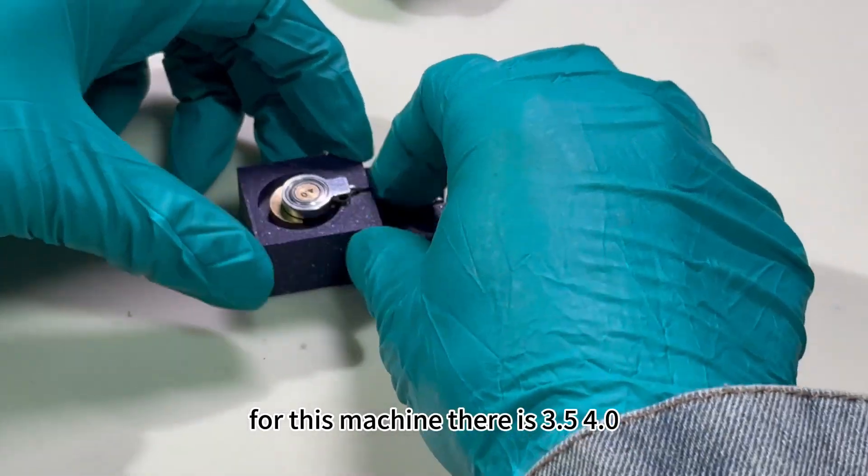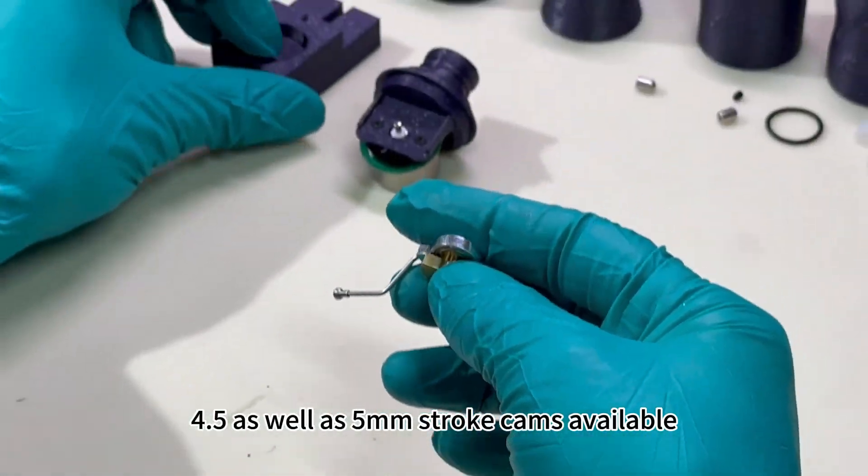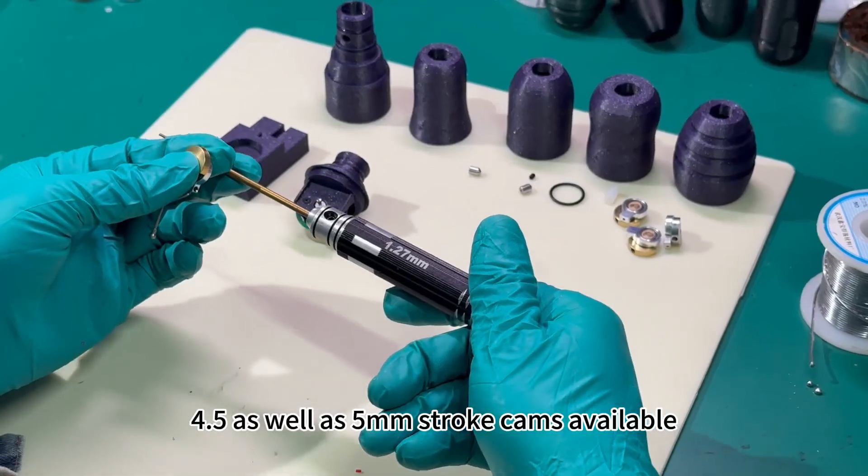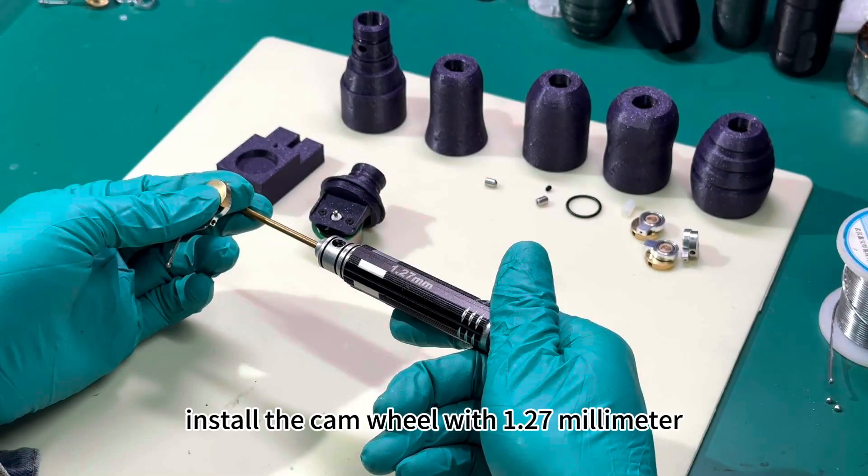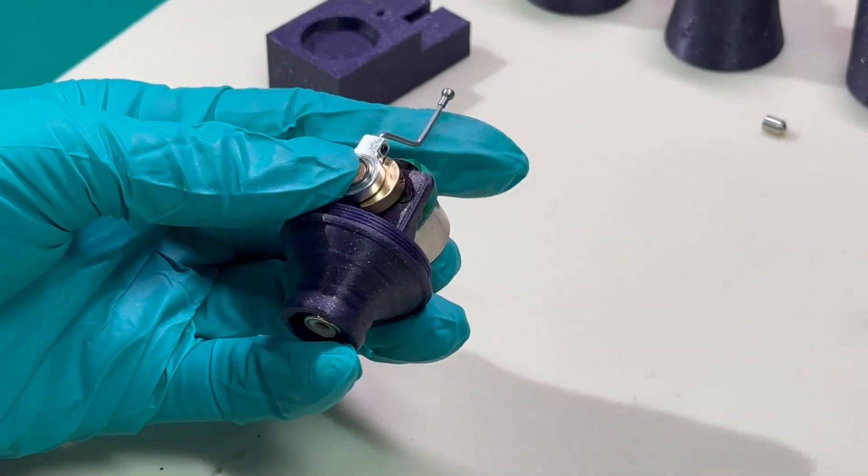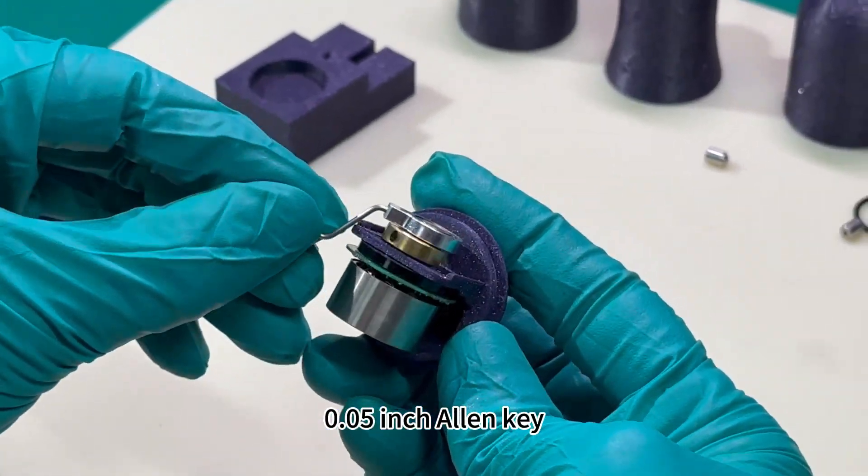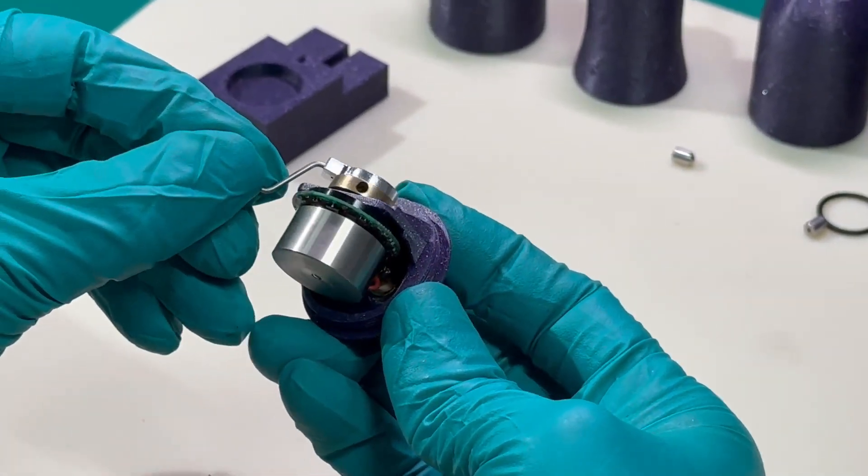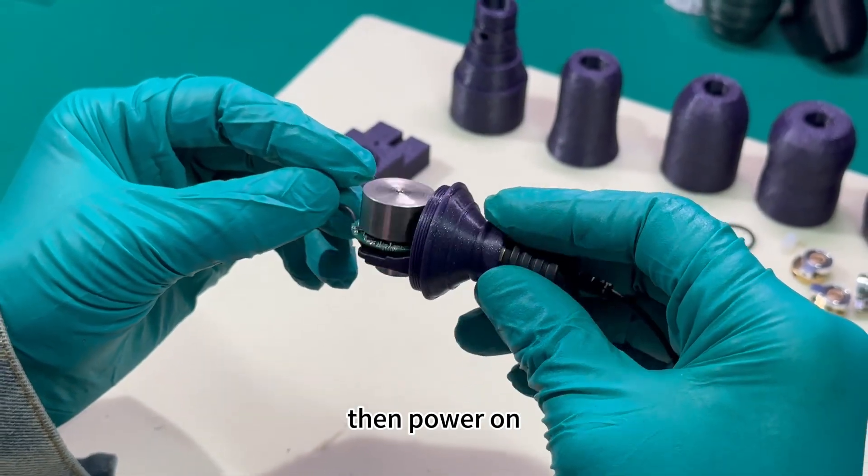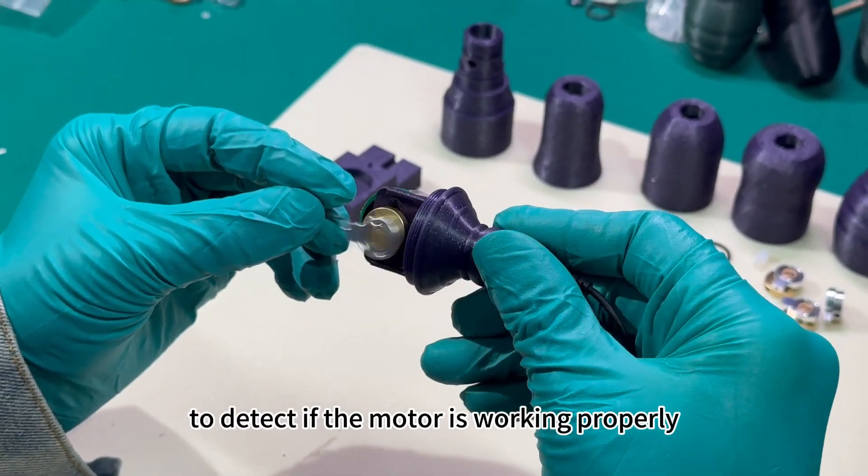4.5, as well as 5-millimeter stroke cams available. Install the cam wheel with a 1.27-millimeter (0.05-inch) Allen key. Then power on to check if the motor is working properly.